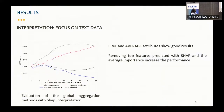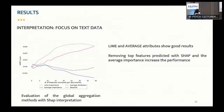To evaluate the global aggregation methods, I plot how the performance changes when we remove the top features predicted by each SHAP method using the AOPC curve. The dotted line is the baseline when removing a random feature. We can see that the two upper lines — including average attributes — show good results, but only the average importance method actually increased the performance after removal.